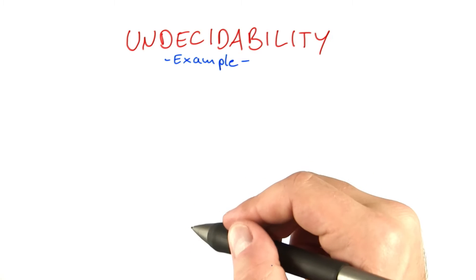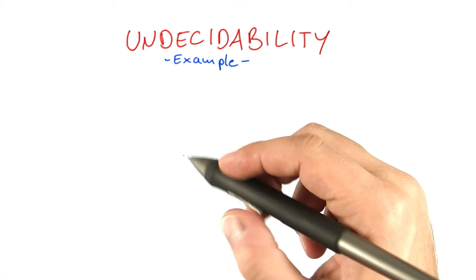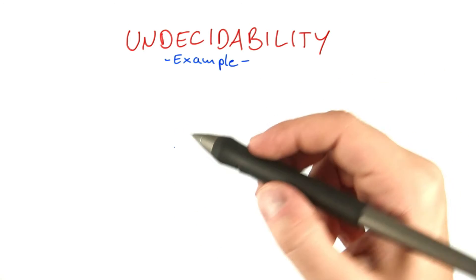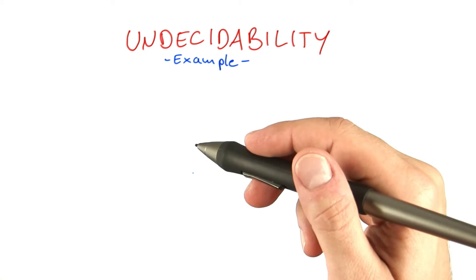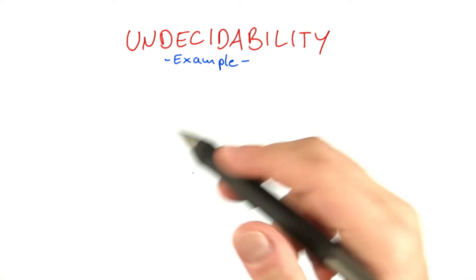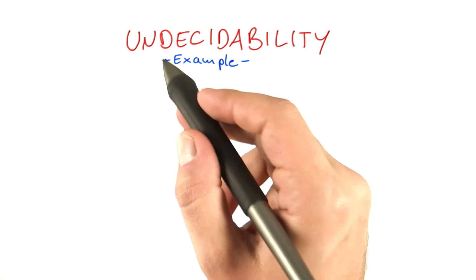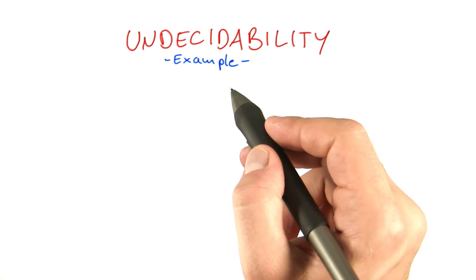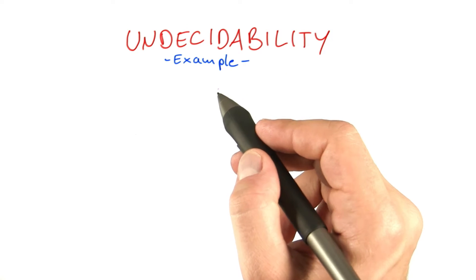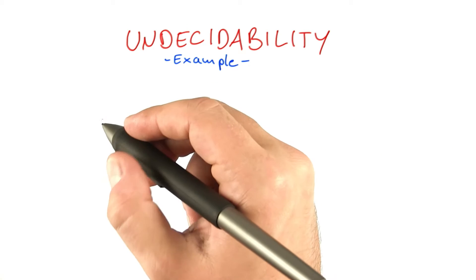So now you might be thinking: programs can become so complicated that no algorithm can decide whether they run infinitely or not. So is there a short program for which I could show you undecidability? Well, yes, there is such a program.